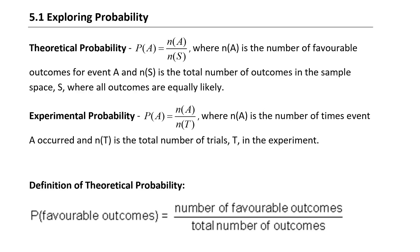Experimental probability is what happens when you actually perform an experiment or try this out and see that it's not always perfect but very close to our theoretical probability.